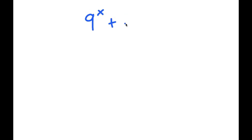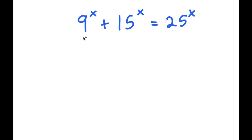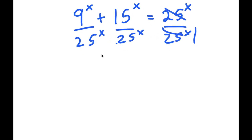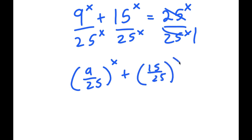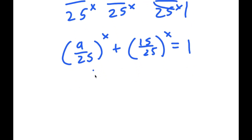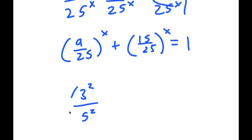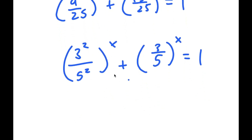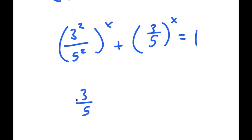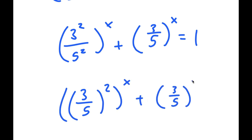In this video, I'm going to be solving the equation 9 to the power of x plus 15 to the power of x is equal to 25 to the power of x. I'm going to first start by dividing every term by 25 to the power of x. These cancel to get 1, so now I have (9 over 25) to the power of x plus (15 over 25) to the power of x equals 1. Now 9 over 25 can be rewritten as 3 squared over 5 squared, which is (3 over 5) squared, and 15 over 25 simplifies to 3 over 5.